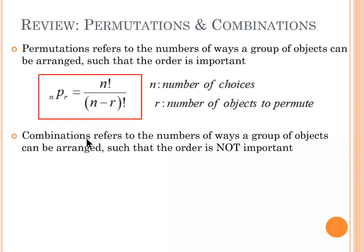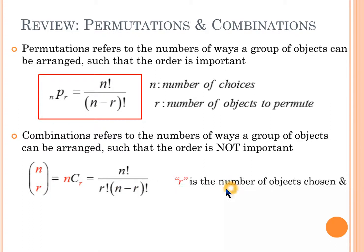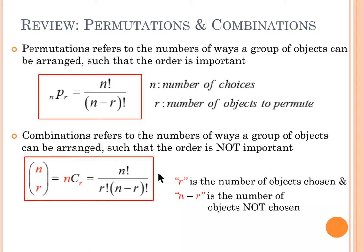For combinations, this refers to the number of ways a group of objects can be arranged such that the order is not important. The notation is n choose r, and that's going to be n factorial divided by r factorial times (n minus r) factorial. Here r is the number of objects chosen and n minus r is the number of objects not chosen.